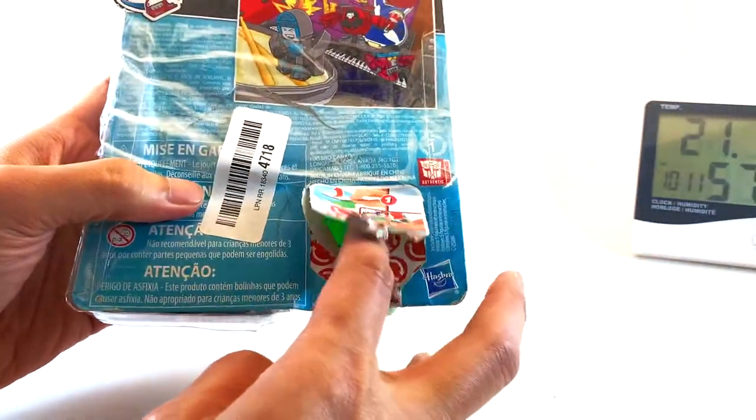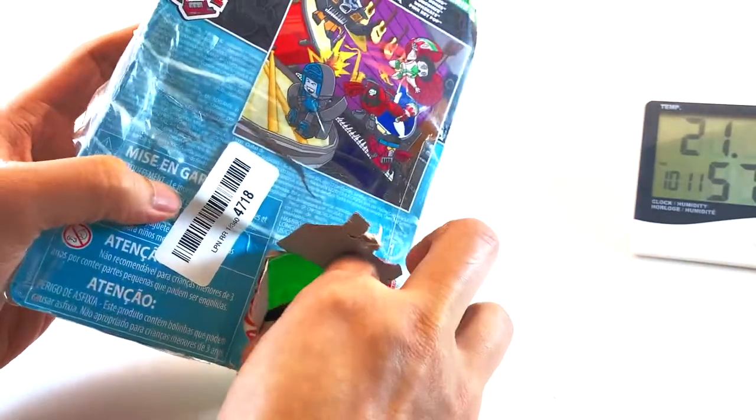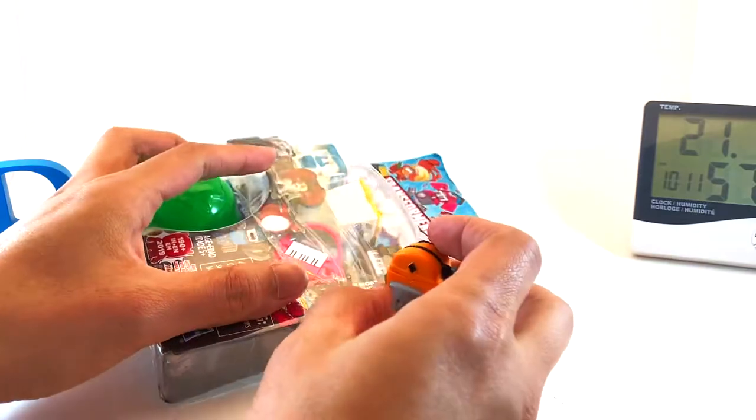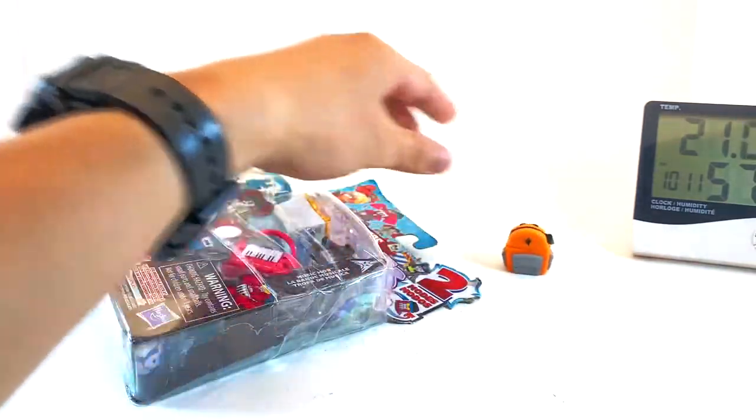We've already looked at what's inside the blind pack. Here it is again. It's a backpack. Pretty cool looking. I hope I don't have this yet. I don't think I do, so that's cool.